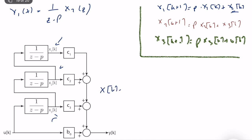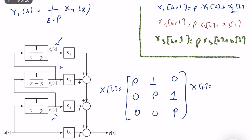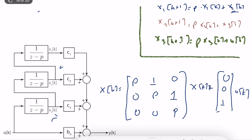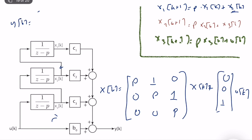The state equation is: x(k+1) = [p, 1, 0; 0, p, 1; 0, 0, p]·x(k) + [0; 0; 1]·u(k). The output equation is y(k) = [c1 c2 c3]·x(k) + b0·u(k). So for a third-order transfer function where all poles are repeated, we have a structure like this.